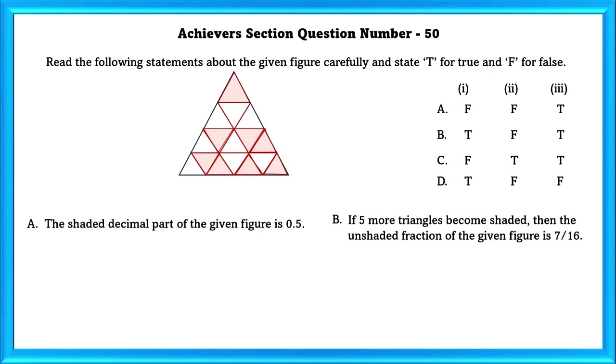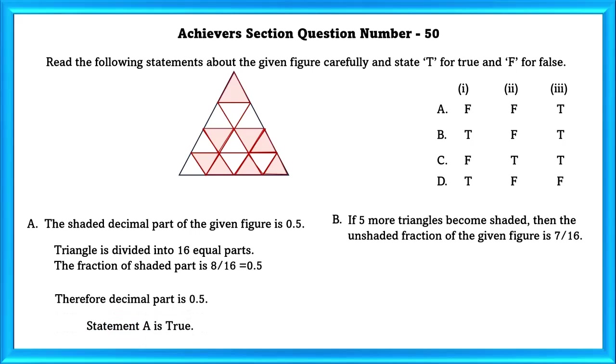Achievers Section Question Number 50: Read the following statements about the given figure carefully and state T for true and F for false. A: The shaded decimal part of the given figure is 0.5. Triangles divided into 16 equal parts, the fraction of shaded parts is 8 by 16 which is equal to 1 by 2 which is also equal to 0.5. Therefore decimal part is 0.5, so hence statement A is true.